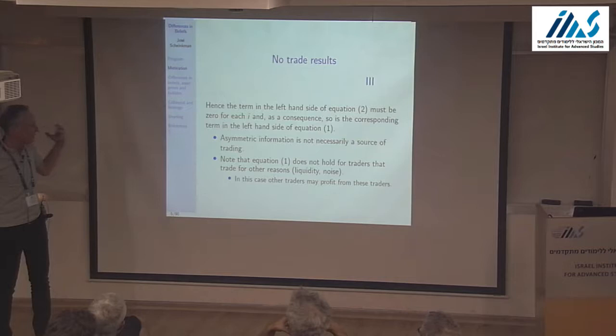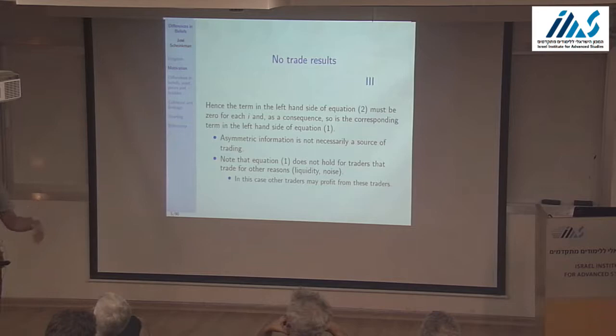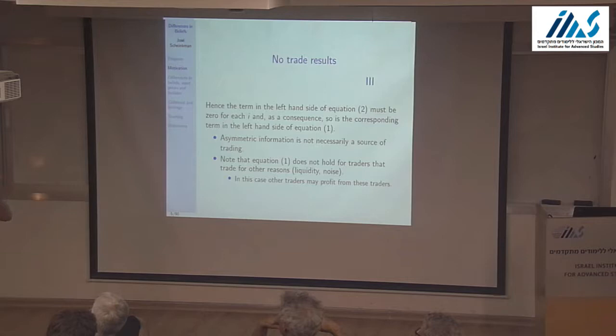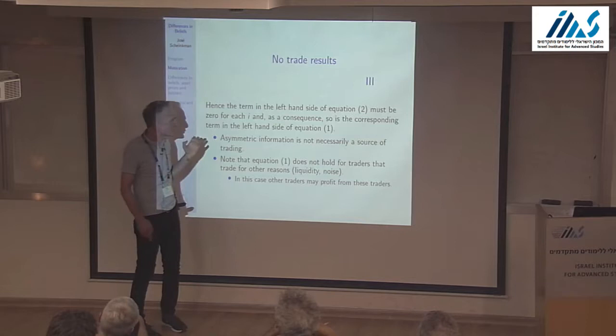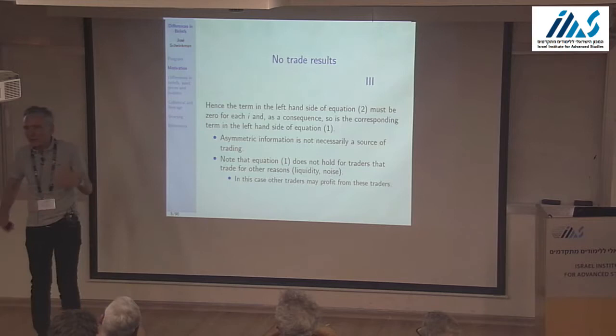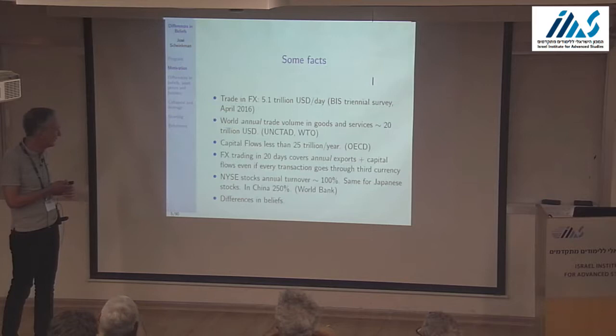One way to get out of this is to have people out there who don't make money trading — the famous noise traders. If they're willing to lose money due to hedging or liquidity reasons, trading can occur. Some colleagues at Chicago complained: where do noise traders come from? They were needed to make the model work. Asymmetric information per se is not necessarily a source of trading.